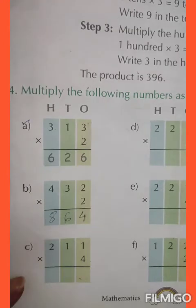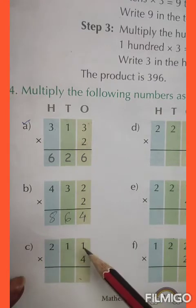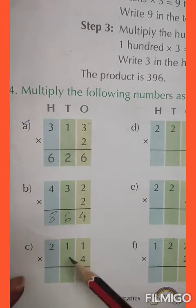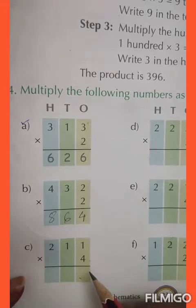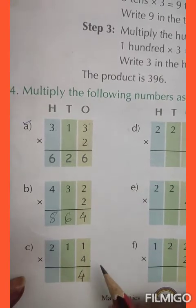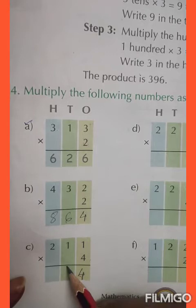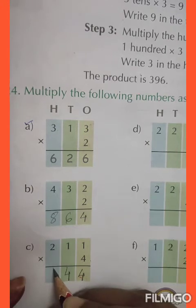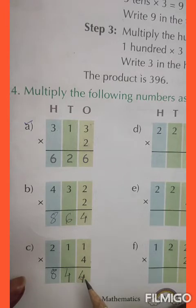Question number C, we have to multiply 211 by 4. Let us multiply: 4 ones are 4, 4 ones are 4, 4 twos are 8. The answer is 844.